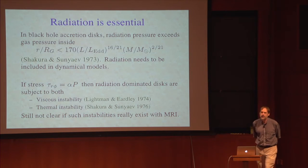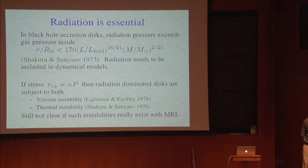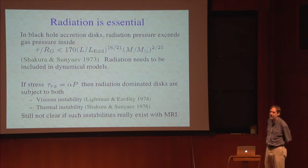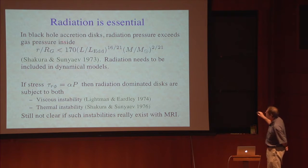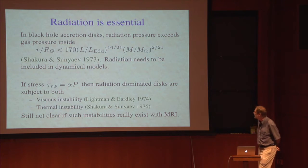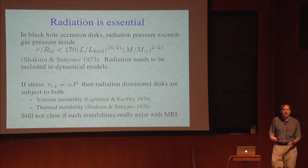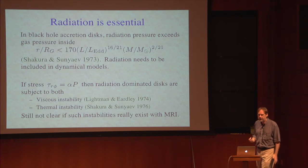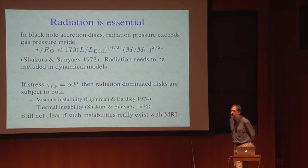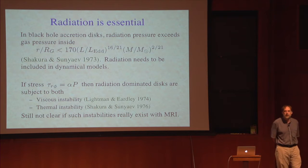In addition, if you're talking about accretion onto luminous sources, you also need to worry about radiation. Since the seminal paper 40 years ago, we've understood that radiation pressure is very important — in fact, it dominates. The highest energy density is not in the thermal gas pressure but in the radiation pressure inside a couple of hundred R_G around a black hole accreting close to the Eddington luminosity.